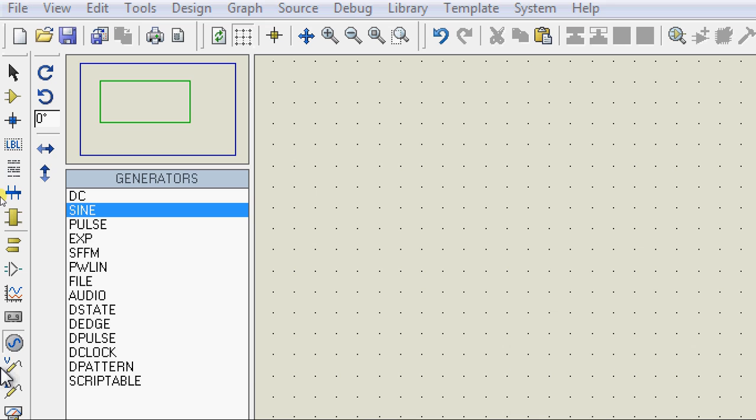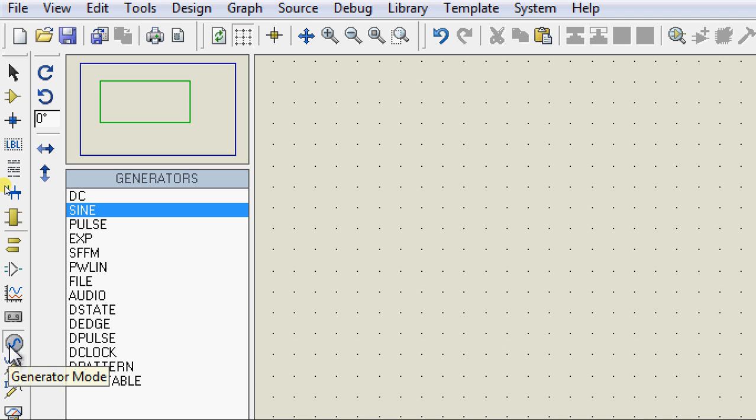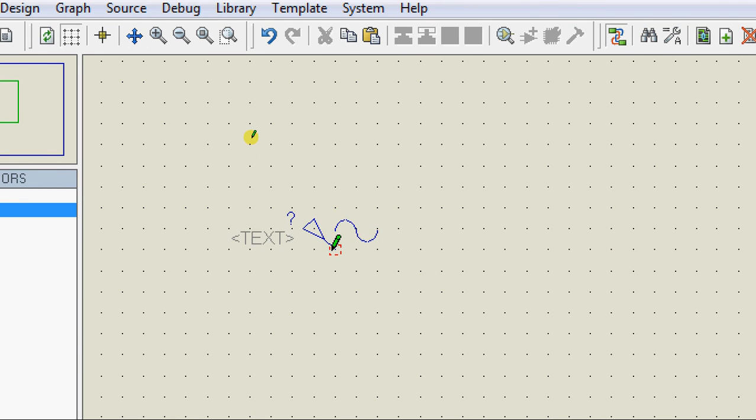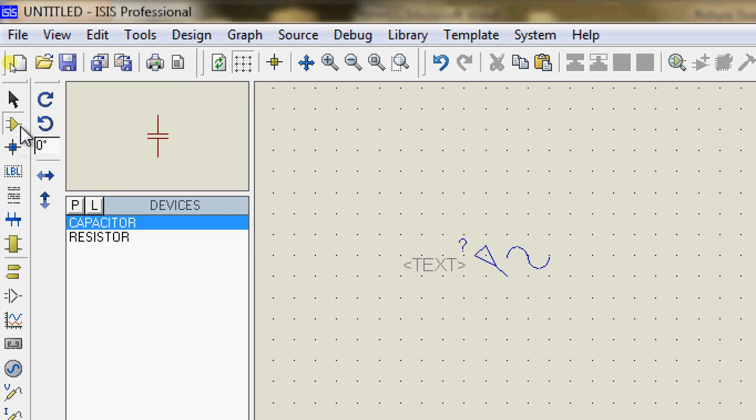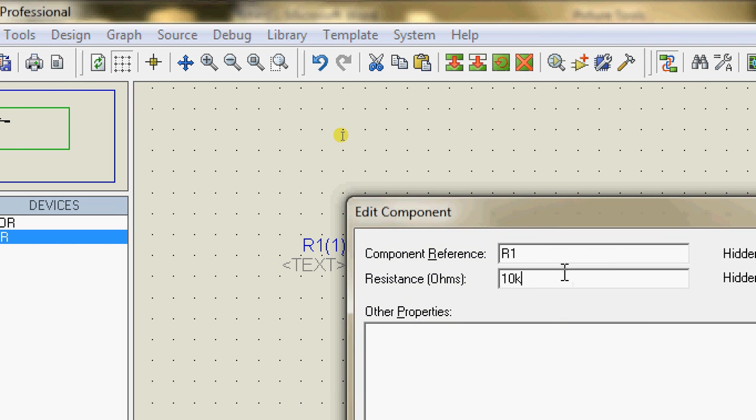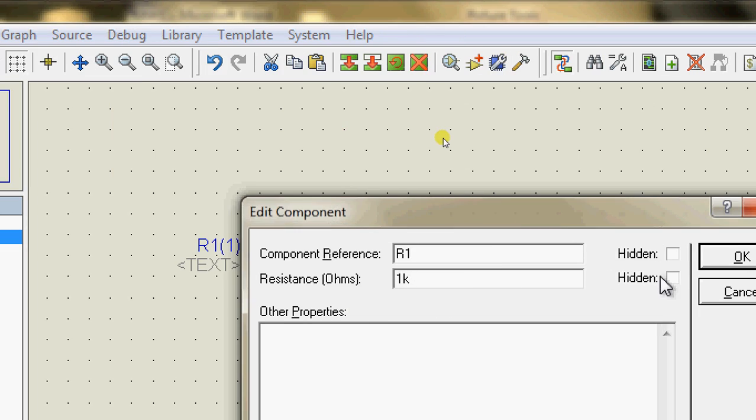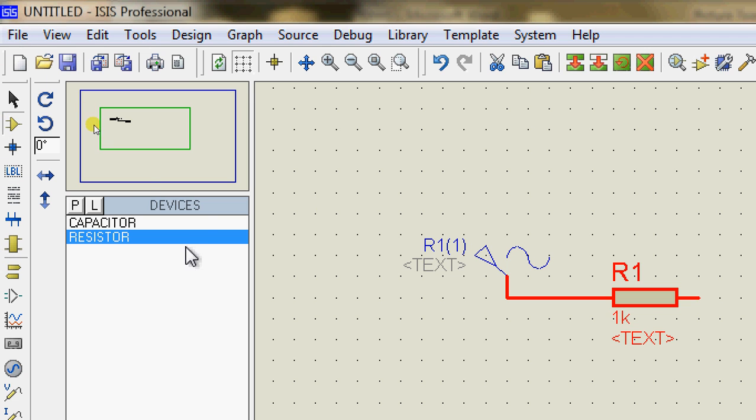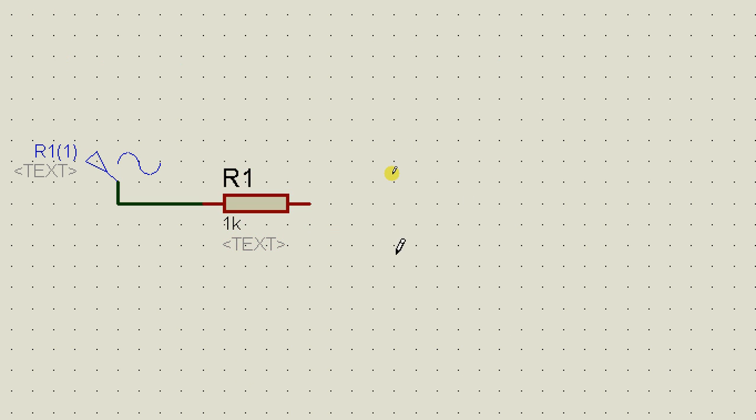Off with the low pass filter. The first thing we need is our continuous time signals so click on generators and select sine. In series with that we need a resistor and set this to one kilo ohm.